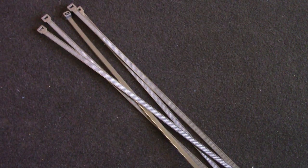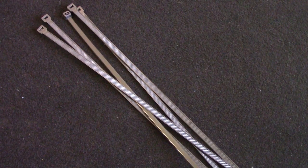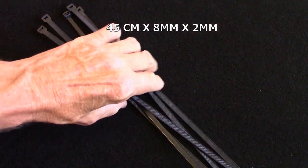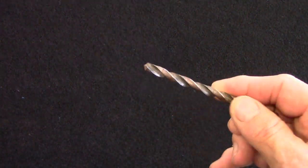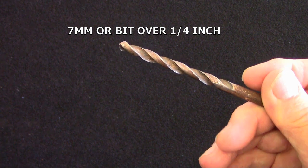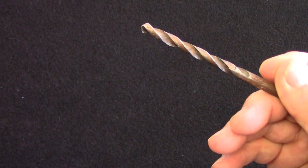So we'll start off with what we actually need: zip ties, five zip ties, they're 45cm long, and a drill bit. This one's 7mm or a bit over a quarter inch drill bit.